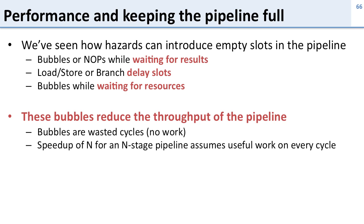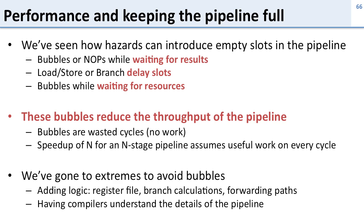If we want to get the speedup of N for an N-stage pipeline, we need to keep as much work as we can in the pipeline — that is, we need to have as few bubbles as possible. And we've gone to extremes to avoid these bubbles, adding lots of logic and complications to the processor.